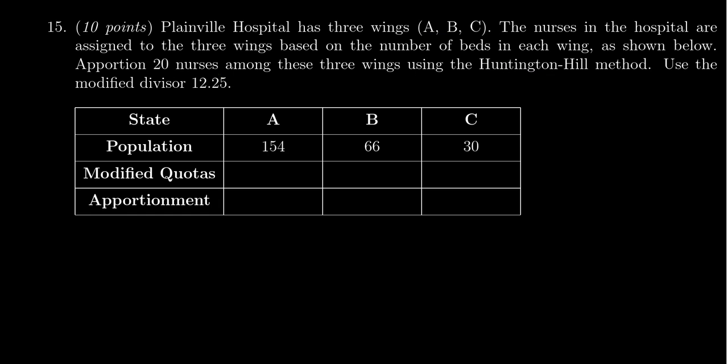Now Huntington Hill is a divisor method so we have to look for a modified divisor. For the sake of simplicity on this exam, a modified divisor is given to you of 12.25.